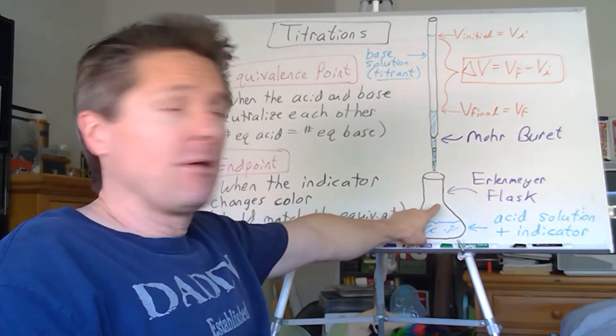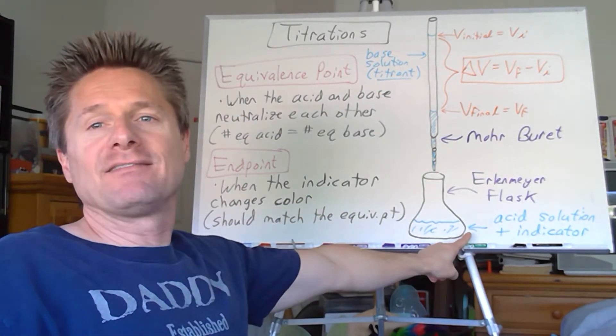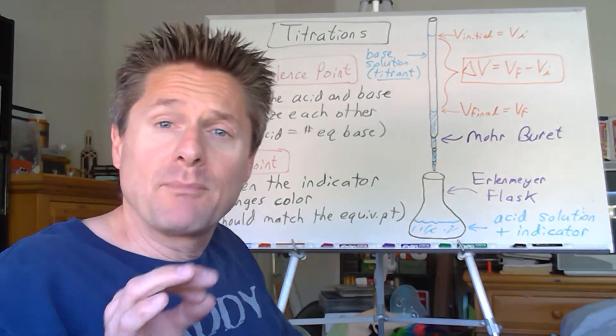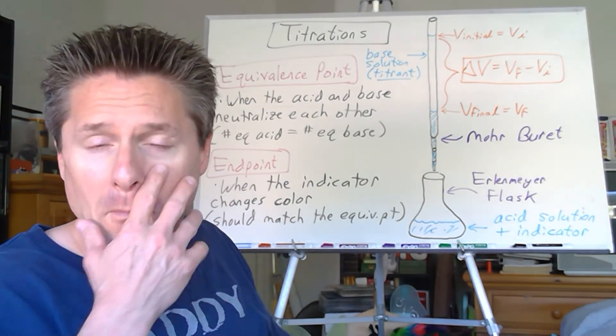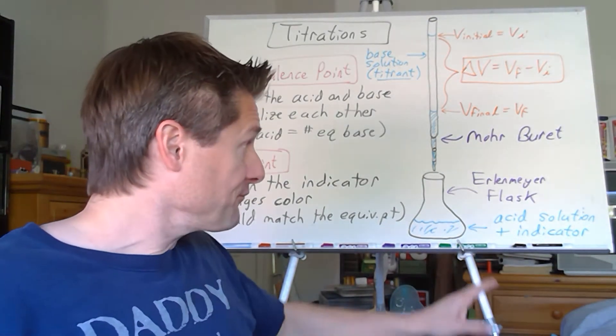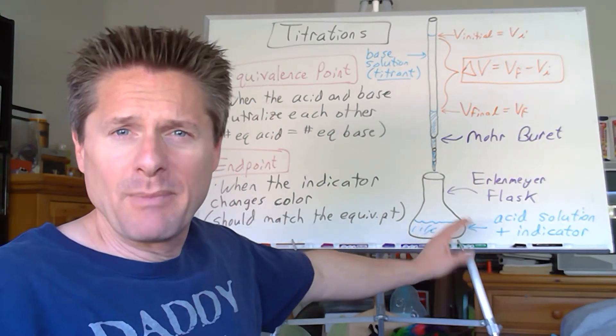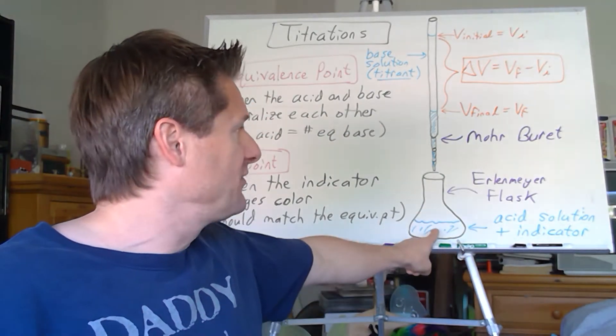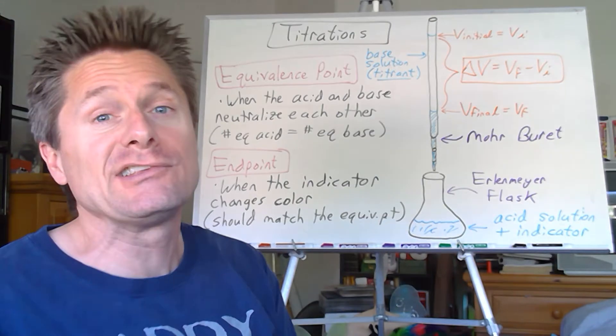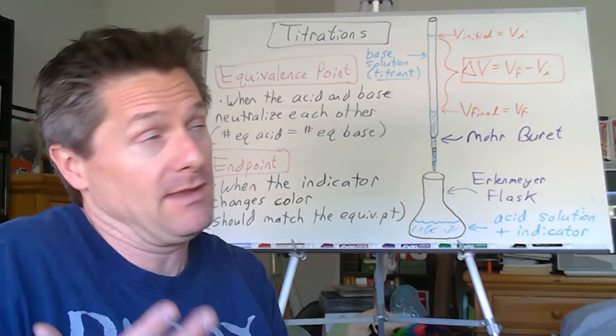So we've got our Erlenmeyer flask. Commonly you'll have some unknown acid solution in there with a few drops of an indicator. It doesn't have to be the acid. There could be the base. But typically you'll see the acid of some known volume and usually some unknown concentration.